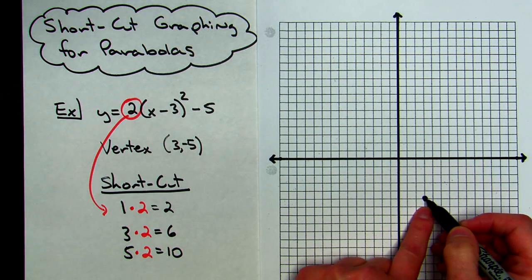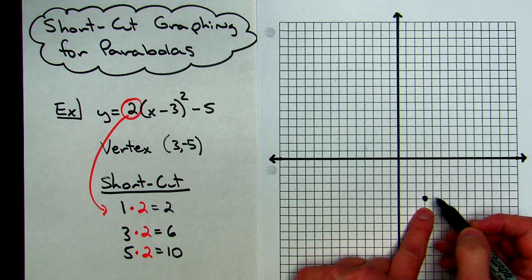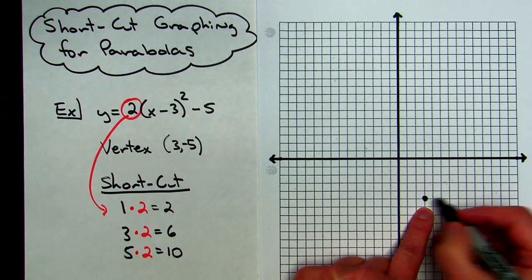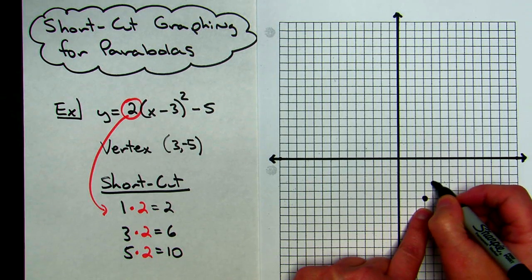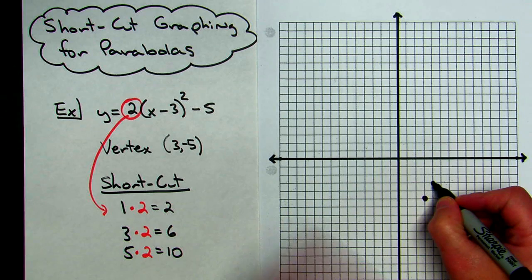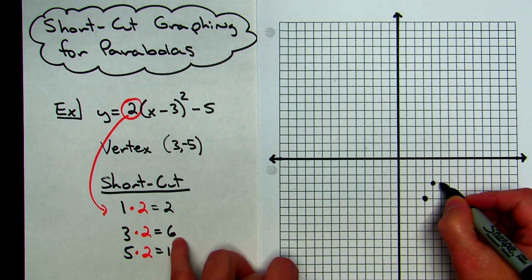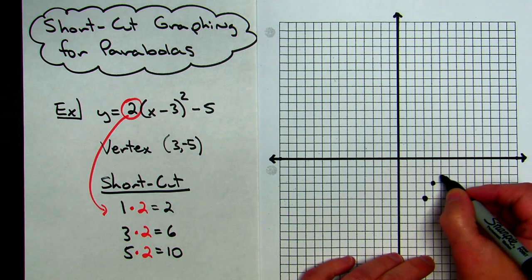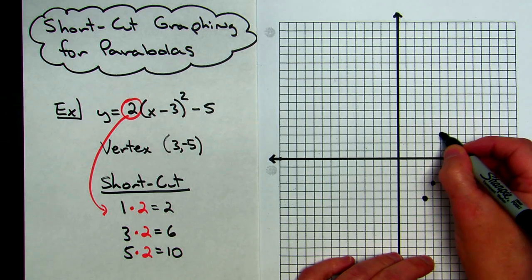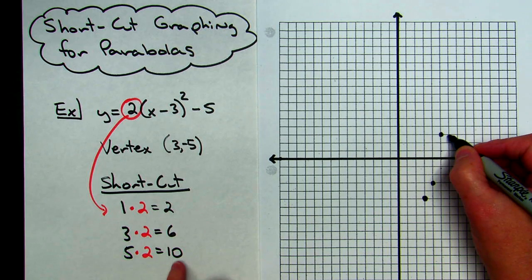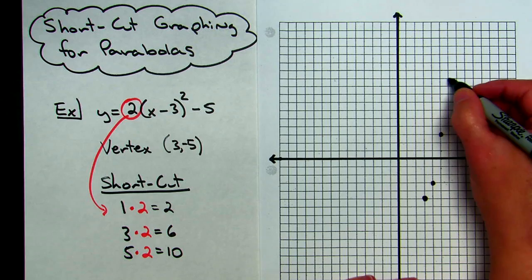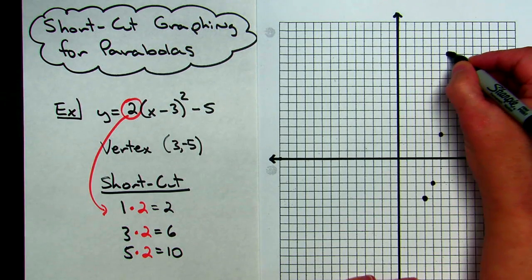Now, from the vertex, I am going to move to the right 1, and then up 2, because I know it's an upright parabola, so over to the right 1, up 2, and put a dot. Then I am going to stay at that point, and I am going to go over 1 to the right again. This time I am going up 6: 1, 2, 3, 4, 5, 6. And then from there, I am going to go over 1 to the right, and then up 10: 1, 2, 3, 4, 5, 6, 7, 8, 9, 10.